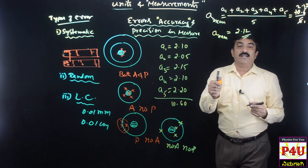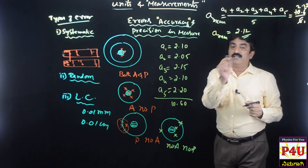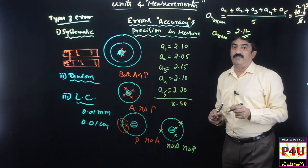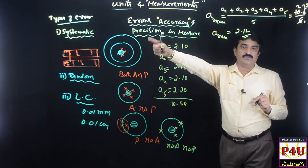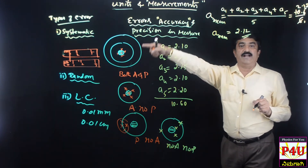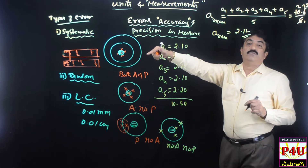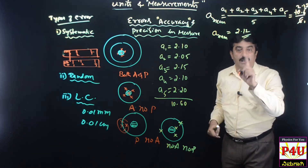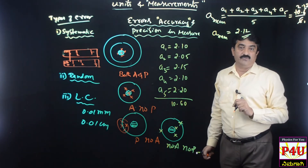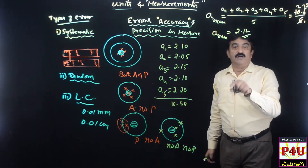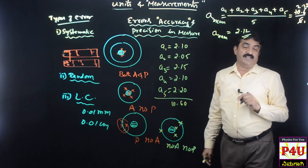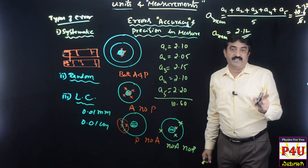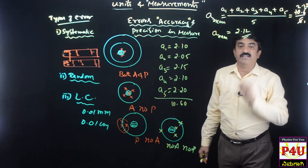Now, there are 3 sources of error: systematic error, random error, and least count error. For the calculation, we use: absolute error, mean absolute error, fractional error or relative error, and percentage error.